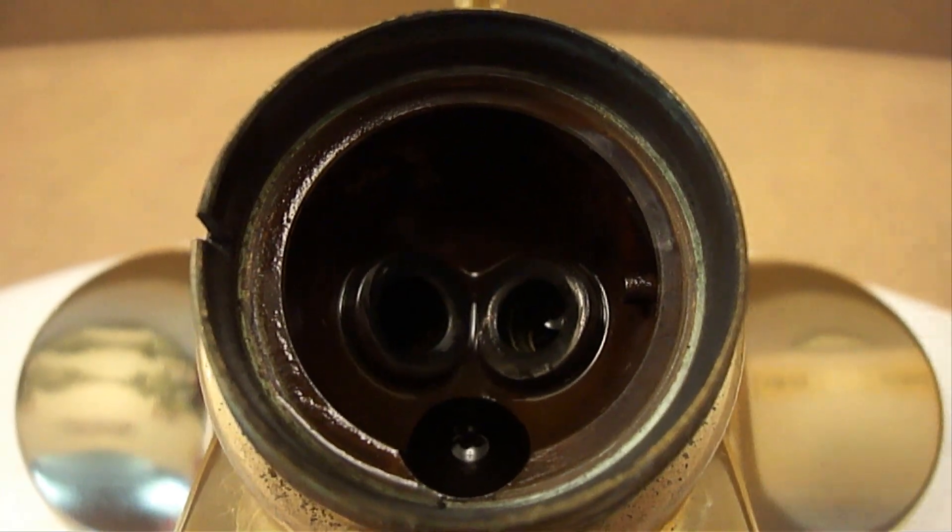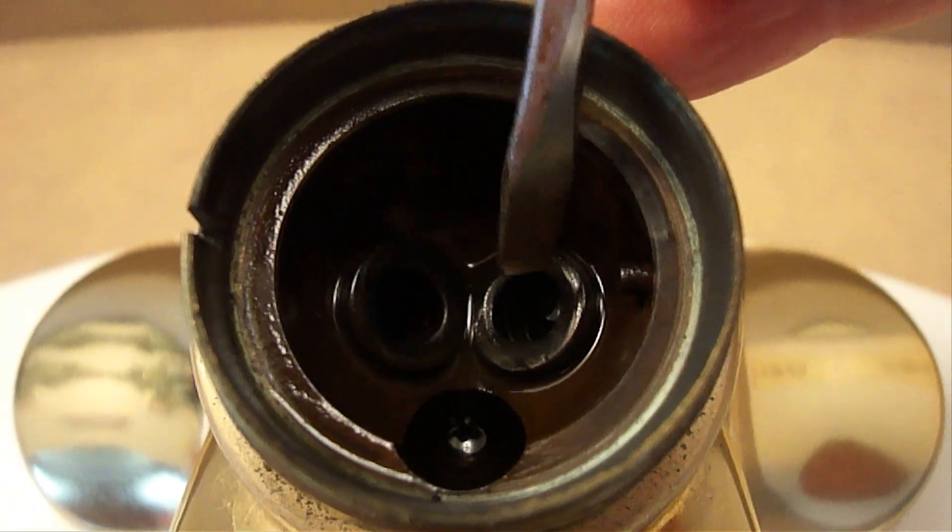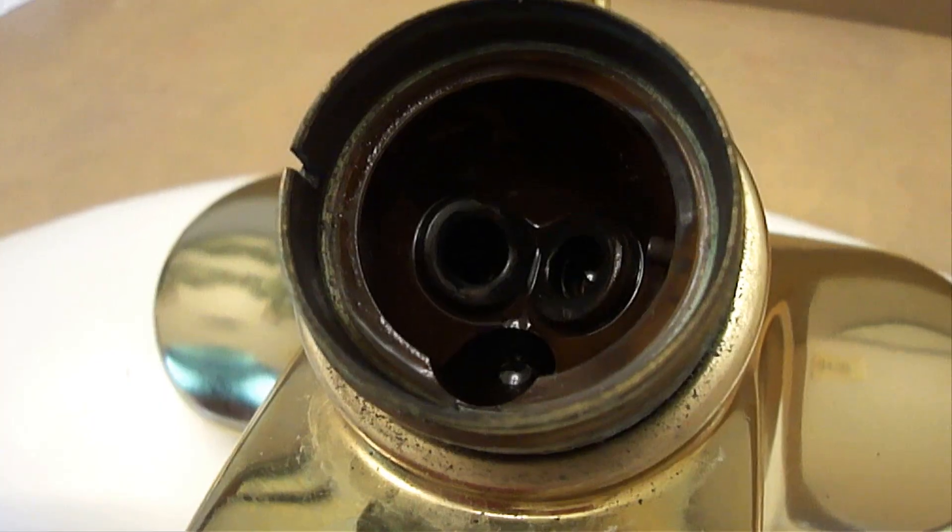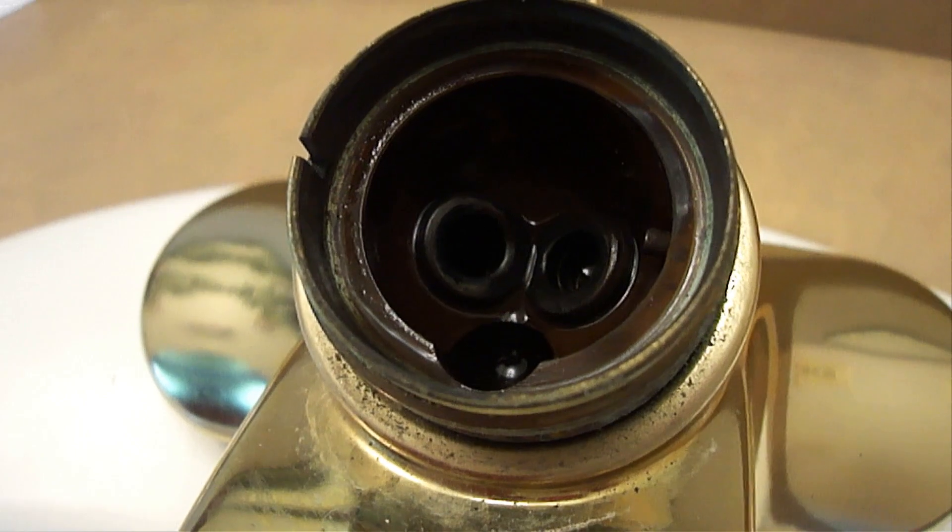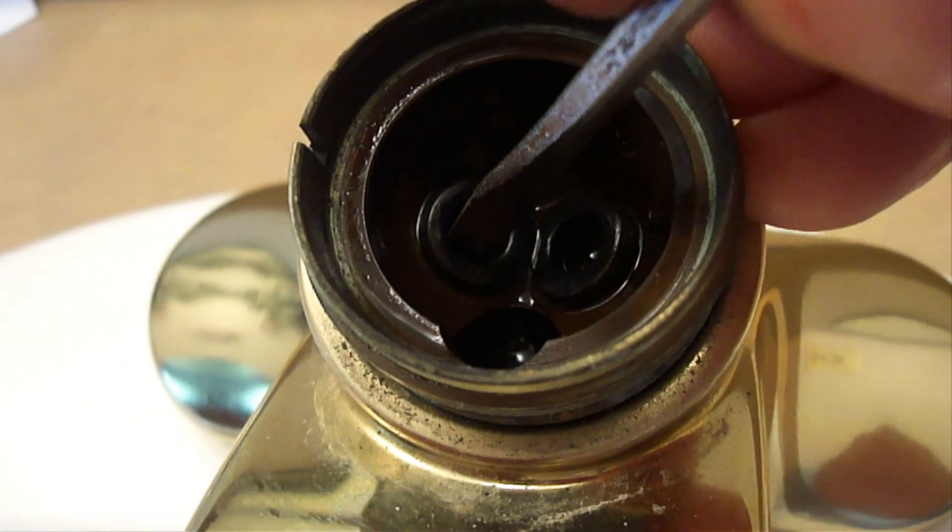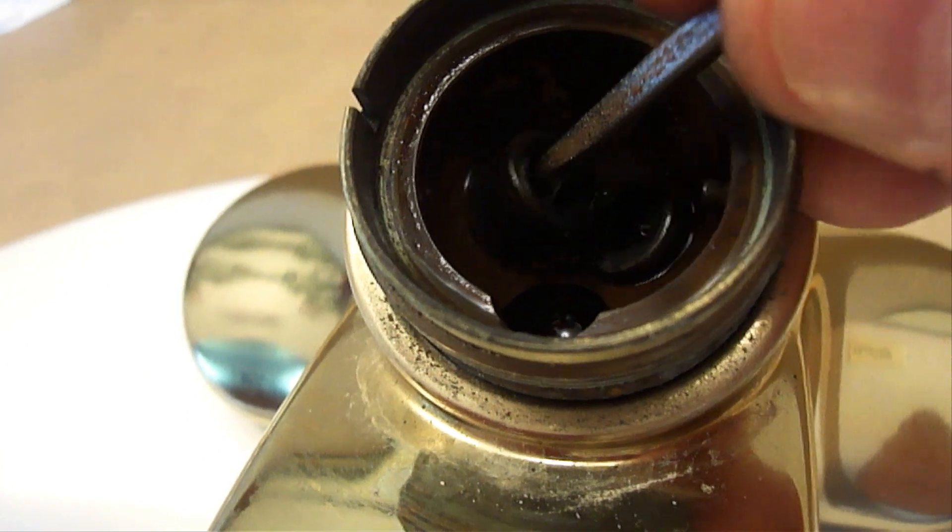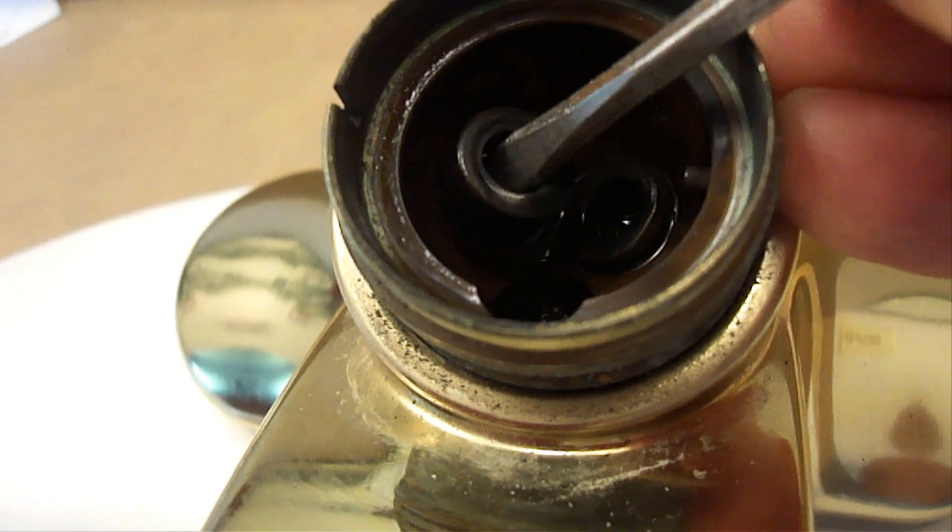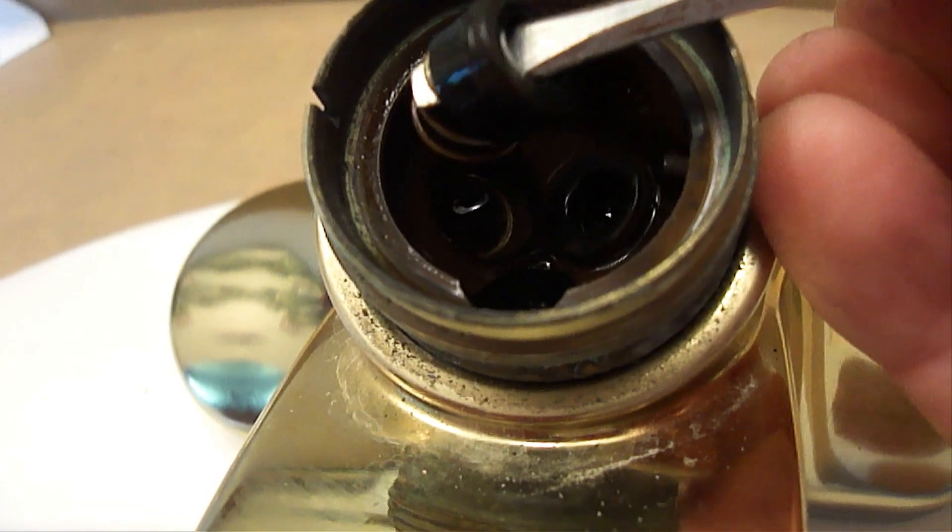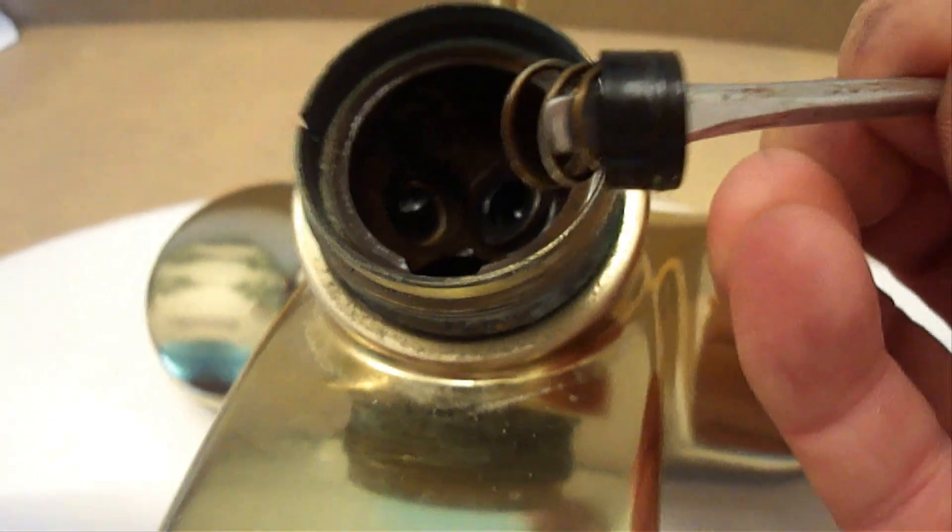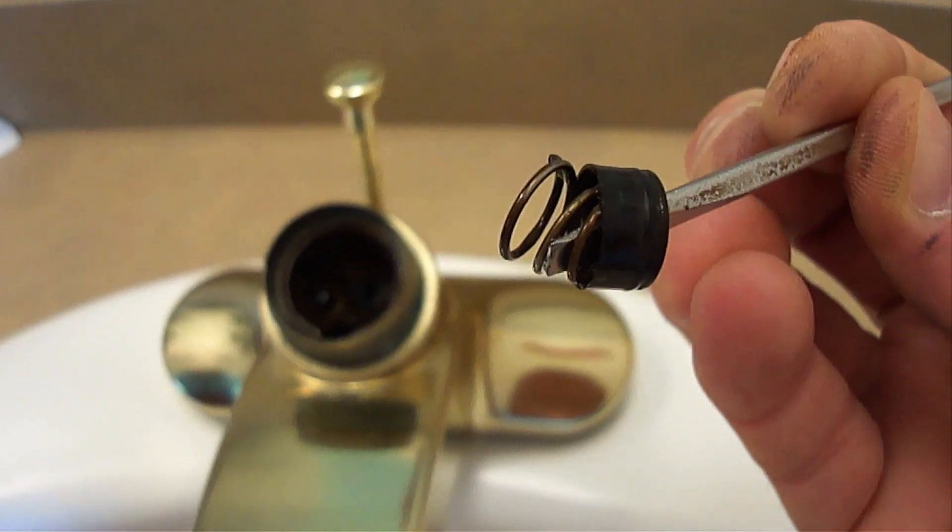This is where the washers and springs are for the hot and cold water. I find the easiest way to remove these washers is just to move back and forth on the inside of the washer with a little screwdriver and lift it out. And as you can see, there's the spring with it.